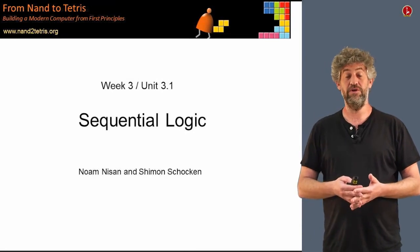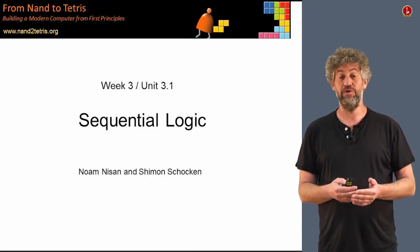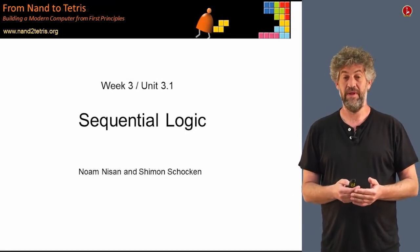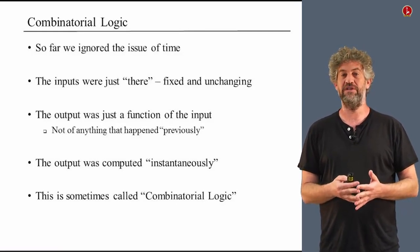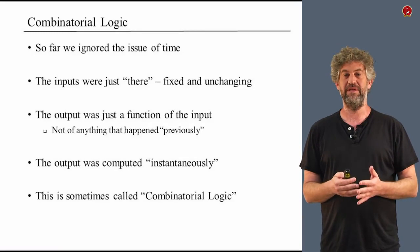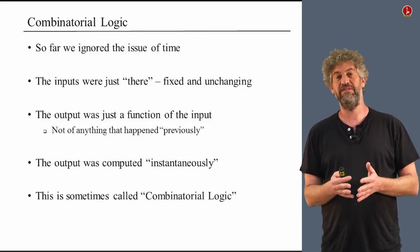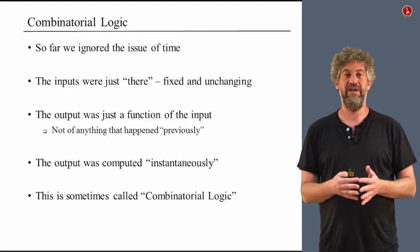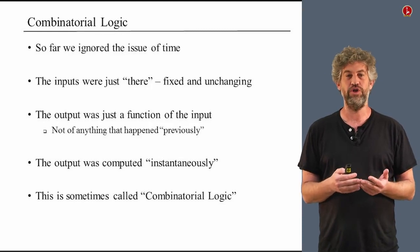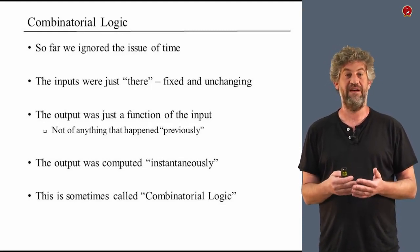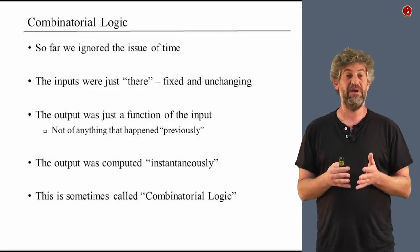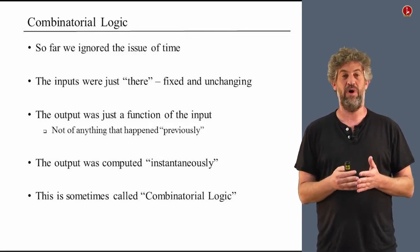In this week we're going to start talking about how computers do one thing after another. In the first two weeks, we've completely ignored the issue of time. Everything happened immediately. There were inputs, and immediately the outputs were some function of them. The inputs never changed. We didn't have any notion of change or things happening one after another. Just some kind of logical mapping from inputs to outputs.